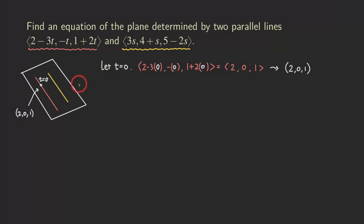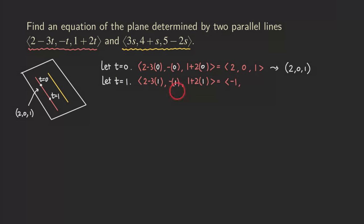For the next point, plug in t equals one. The vector is two minus three times one, minus one, and one plus two times one — so we get negative one, negative one, and three. So the point at t equals one is (−1, −1, 3).